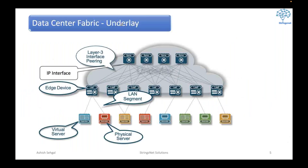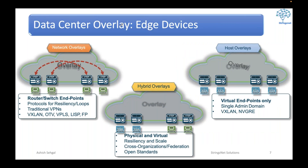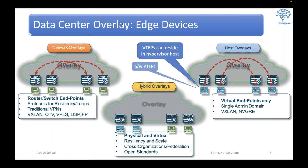We will discuss underlay and overlay terminologies and compare them. We will talk about three different kinds of overlays: number one, network overlay; number two, host overlay; and number three, hybrid overlay. I would request you to pay sincere focus on host overlays and hybrid overlays especially, because during our ACI discussions this understanding will help you grasp how network virtualization is configured in ACI.